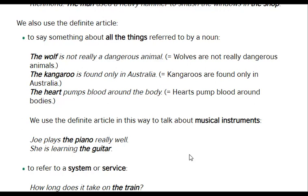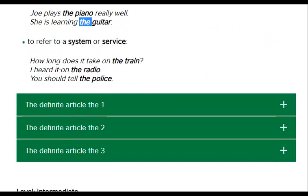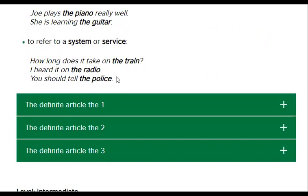We use the definite article in this way to talk about musical instruments. 'Joey plays the piano really well.' 'She's learning the guitar.' Also, to refer to a system or service: 'How long does it take on the train?' 'I heard it on the radio.' 'You should tell the police.' The train, the radio — these are systems. The police and its services are also a system.